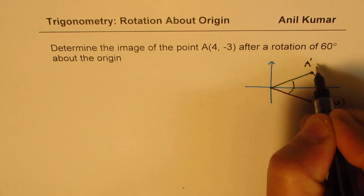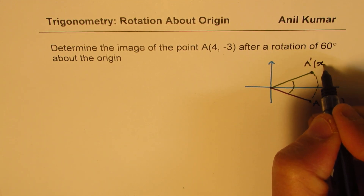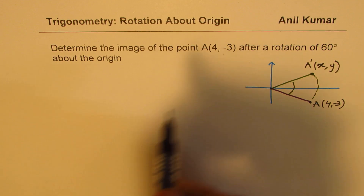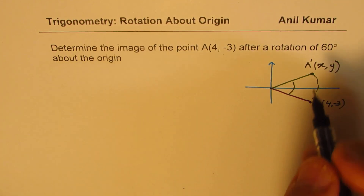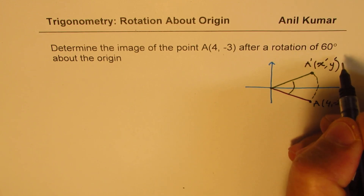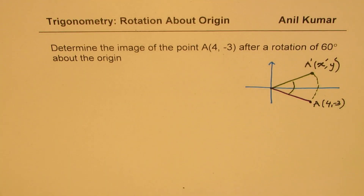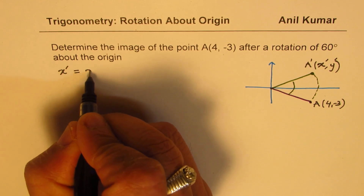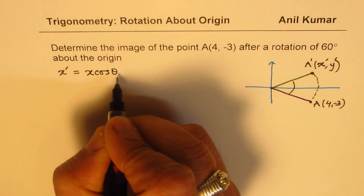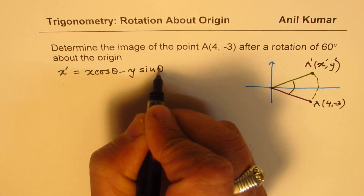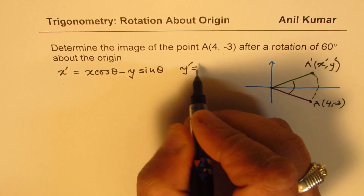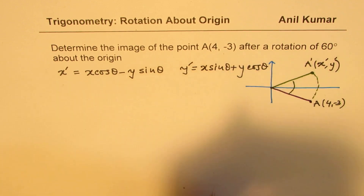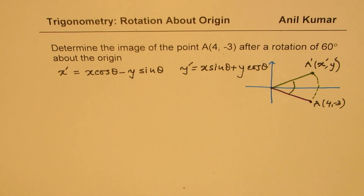We know A is (4, -3) and we'll call the image A'(x', y'). What we learned was: x' = x·cos(theta) − y·sin(theta), and y' = x·sin(theta) + y·cos(theta). That is what we derived, where theta is the angle of rotation about the origin.